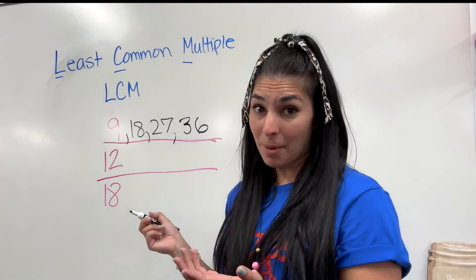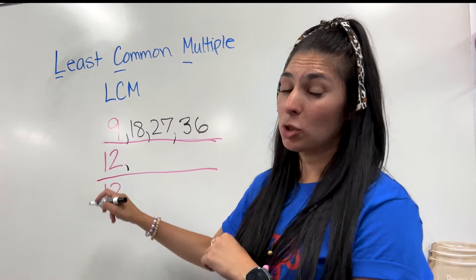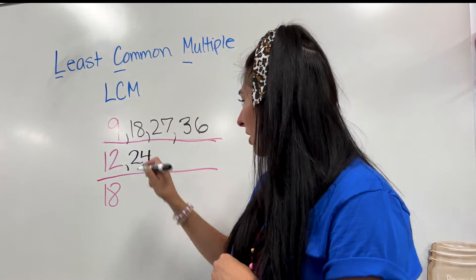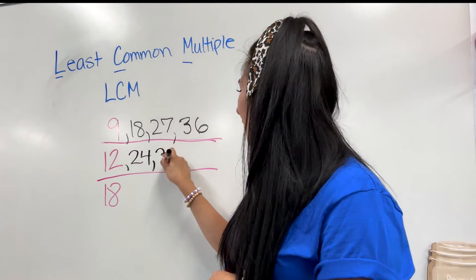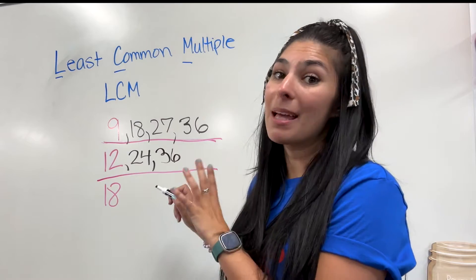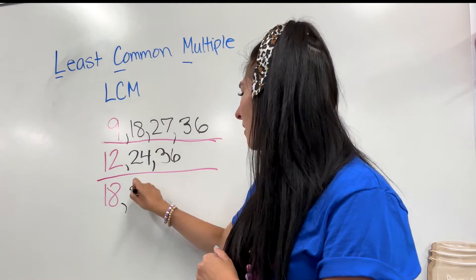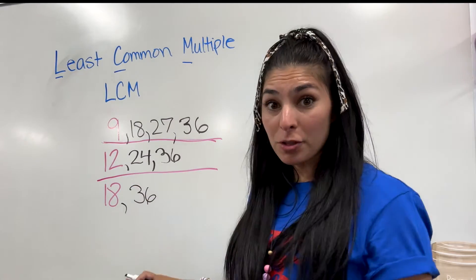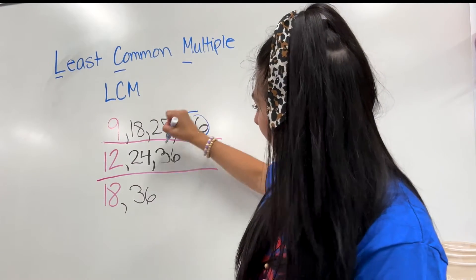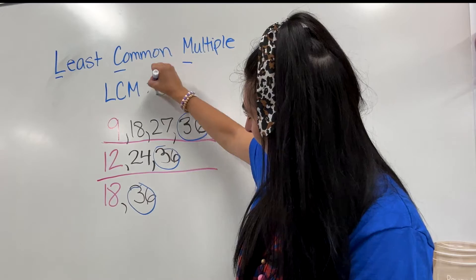Now skip counting by 12s: 12 times 1 is 12, 12 times 2 is 24, 12 times 3 is 36. Those two match! So I'm going to see if 18 has the same multiple in common. 18 times 1 is 18, and times 2 is 36. The first number all three have in common is 36, so the least common multiple is 36.